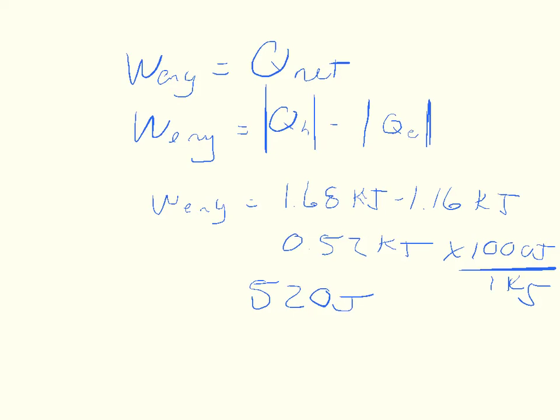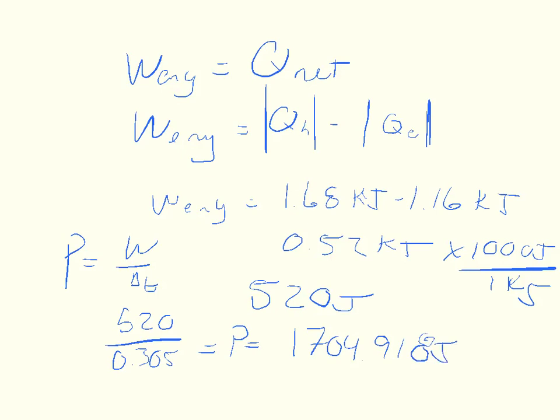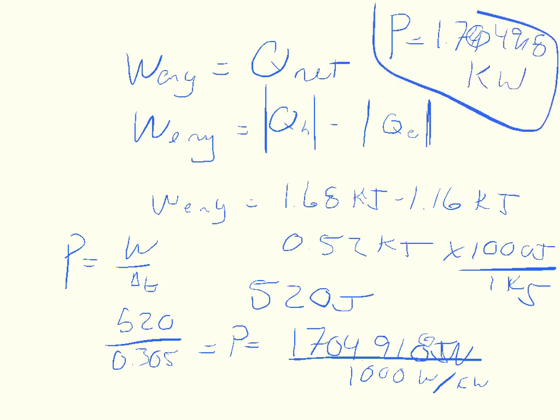And then it says, what is the power output of the engine if each cycle lasts 0.305 seconds? We say that power is equal to work divided by the change of time. The work we said in one cycle was 520 joules divided by the change of time it took to get those joules, which was 0.305 seconds. So the power is equal to 1,704.918 watts. It wants those units in kilowatts, so we have to divide it by 1,000 watts per kilowatt. And you should get that the power is equal to 1.704918 kilowatts.